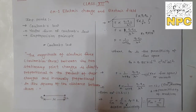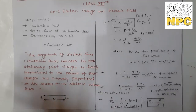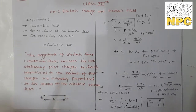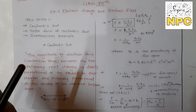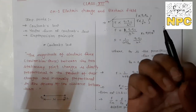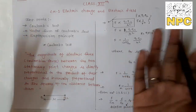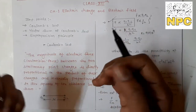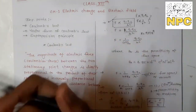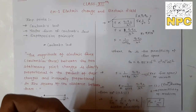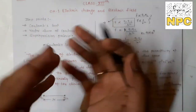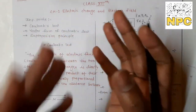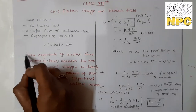Coulomb's has given us a mathematical representation with which you can find the amount of attractive and repulsive force. According to Coulomb's law, suppose we have two charges — the electrical force, or Coulombian force, between the two charges is directly proportional to the product of their charges and inversely proportional to the square of the distance between them. This is Coulomb's law — that is the statement.